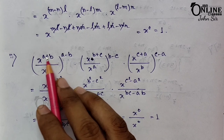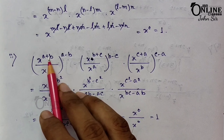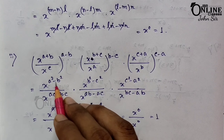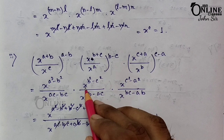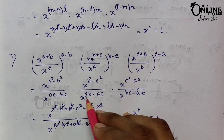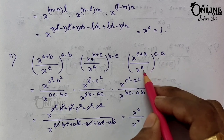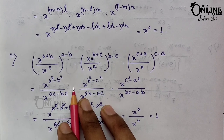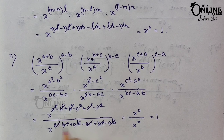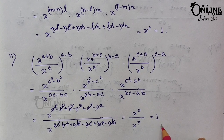Sum 18.2: (x^(a+b) / x^c)^(a−b) × (x^(b+c) / x^a)^(b−c) × (x^(c+a) / x^b)^(c−a). Expanding each: first gives x^(a²−b²−ac+bc), second x^(b²−c²−ab+ac), third x^(c²−a²−bc+ab). Adding all powers: every term cancels, giving x^0 / x^0 = 1.